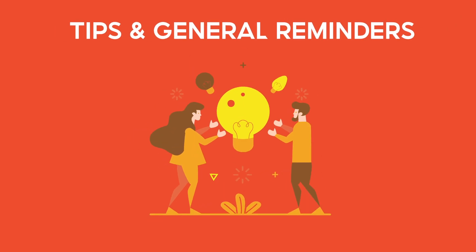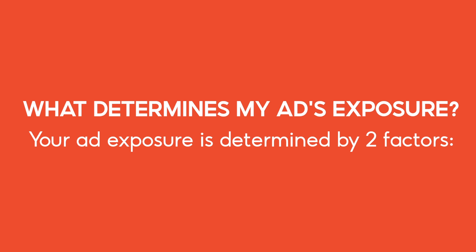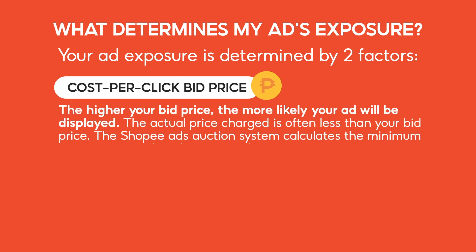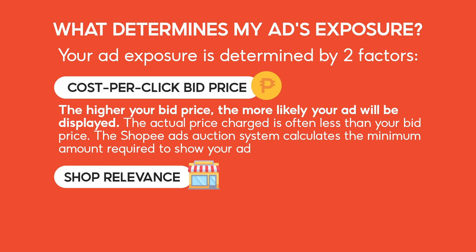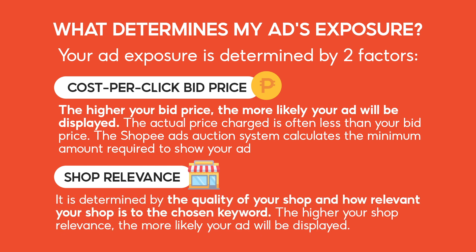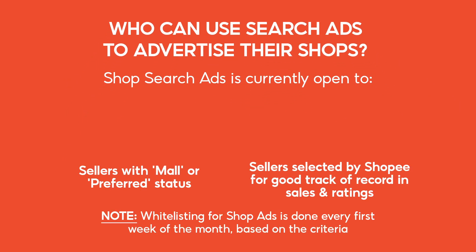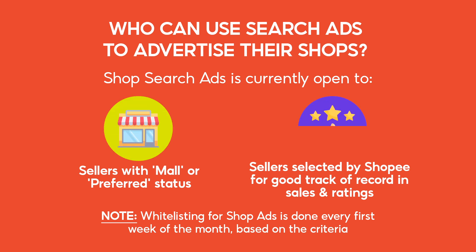Here are some tips to help you with shop ads. First, your ad exposure is determined by two factors. The first determining factor is the cost per click bid price. The higher your bid price, the more likely your ad will be displayed. The actual price charged is often less than your bid price, as the Shopee Ads Auction System calculates the minimum amount required to show your ad. The next determining factor is shop relevance, which is determined by the quality of your shop and how relevant your shop is to the chosen keyword. Note that shop search ads is currently open to sellers with mall or preferred status and sellers selected by Shopee for a good track record in sales and ratings.